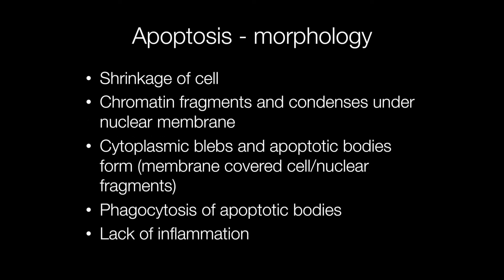Morphologically, apoptosis is characterised by shrinkage of the cell. The chromatin fragments and condenses under the nuclear membrane. There are cytoplasmic blebs and apoptotic bodies form. These membrane-covered fragments are then phagocytosed. And because the membranes keep these pieces intact without leakage of cell contents, there is no inflammatory response.